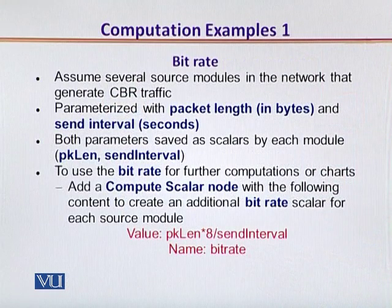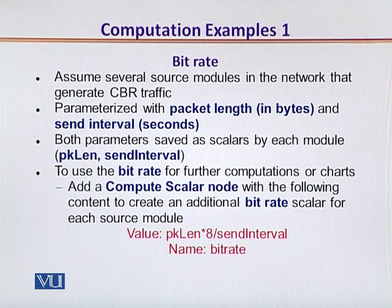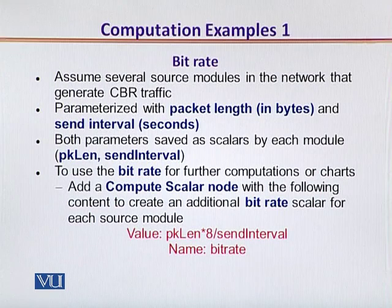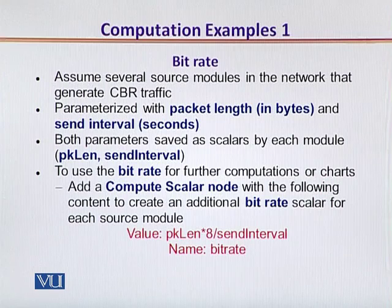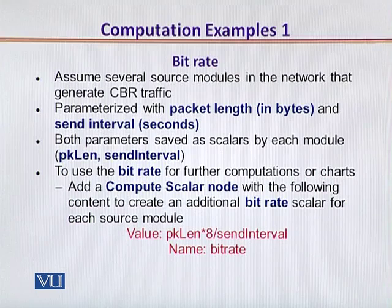First, the bitrate. Let's assume a scenario in which there are several source modules, either simple or compound, in the network which generate CBR — constant bitrate traffic. CBR is characterized by the fact that either the packet size remains the same, or if the packet arrival is varied, then the packet size may also vary such that over a long period, the overall traffic arrival rate remains constant. CBR traffic is identified by the packet length and the duration, which is the send interval.